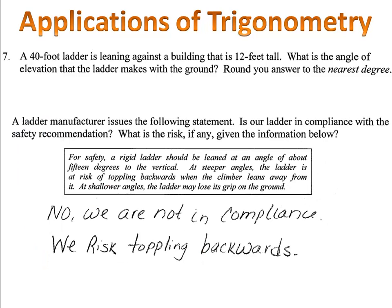Now, to follow up with this, the ladder manufacturer has issued a statement in the owner's manual. That statement says, for safety, a rigid ladder should be leaned at an angle of about 15 degrees to the vertical. At steeper angles, the ladder is at risk of toppling backwards when the climber leans away from it. At shallower angles, the ladder may lose its grip on the ground and fall. Is our ladder in compliance?